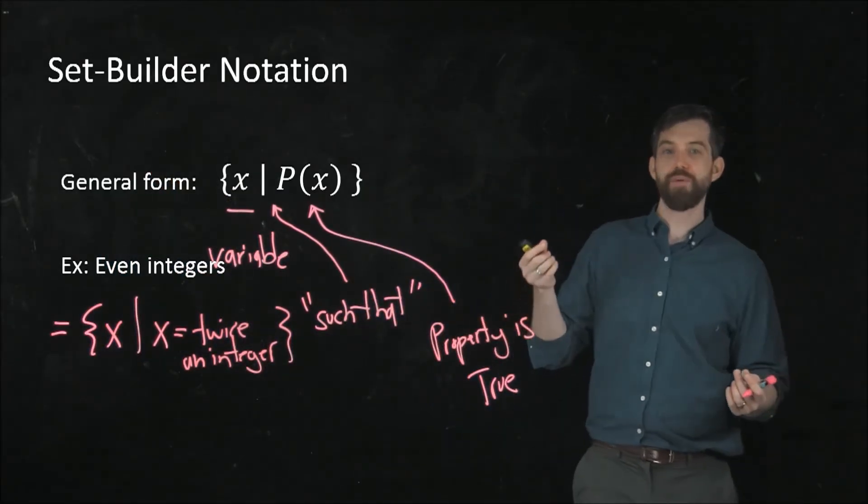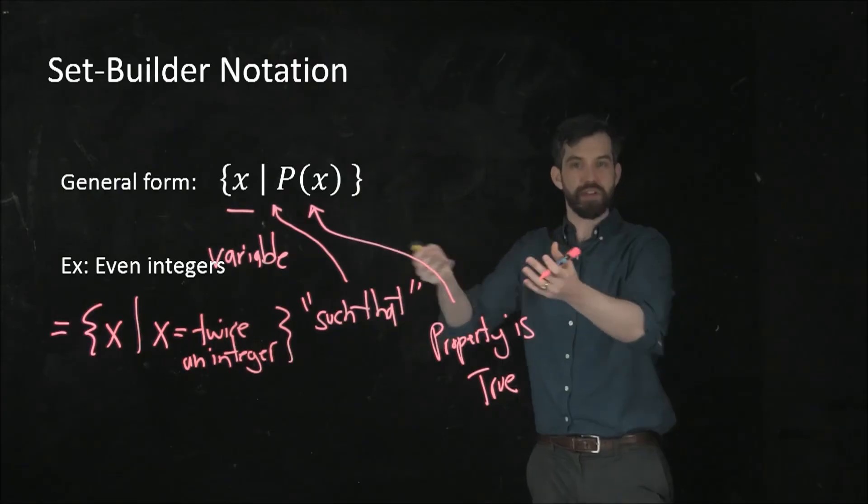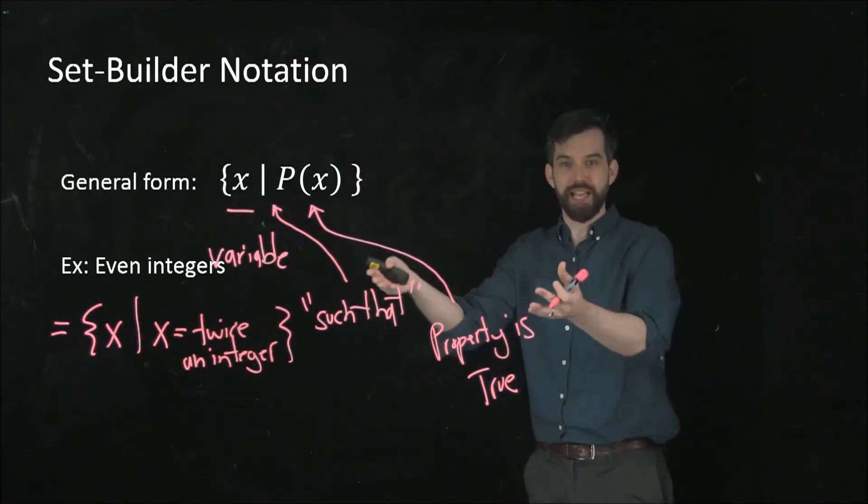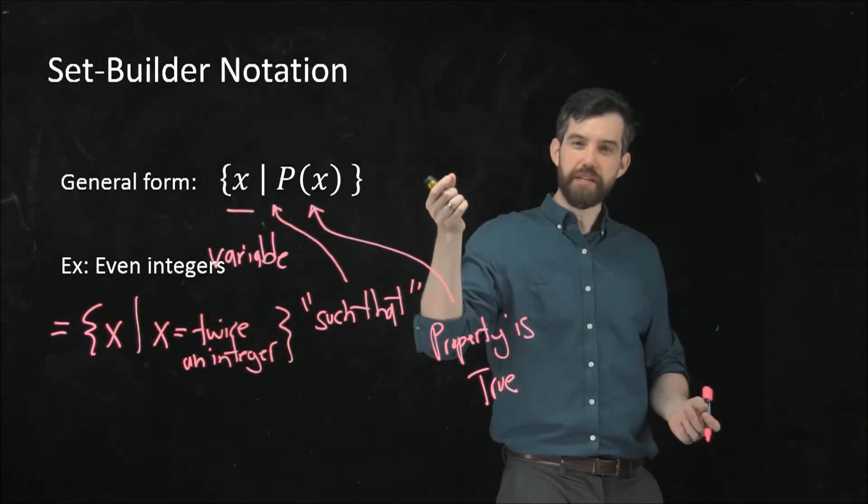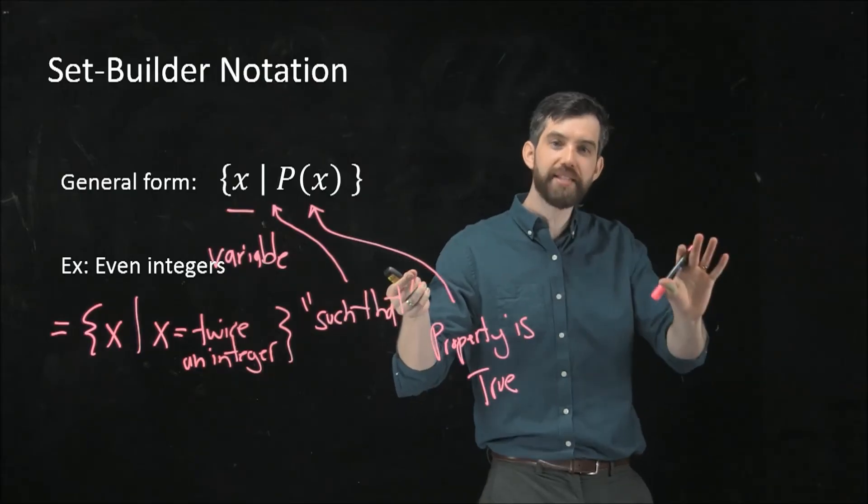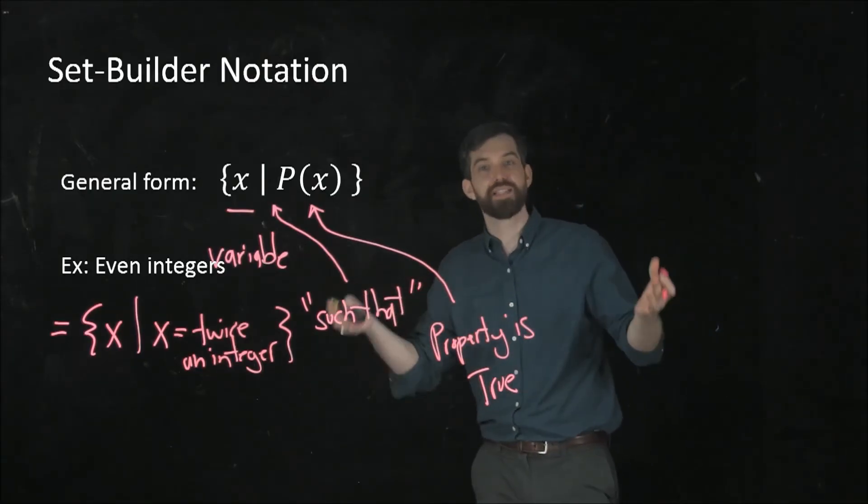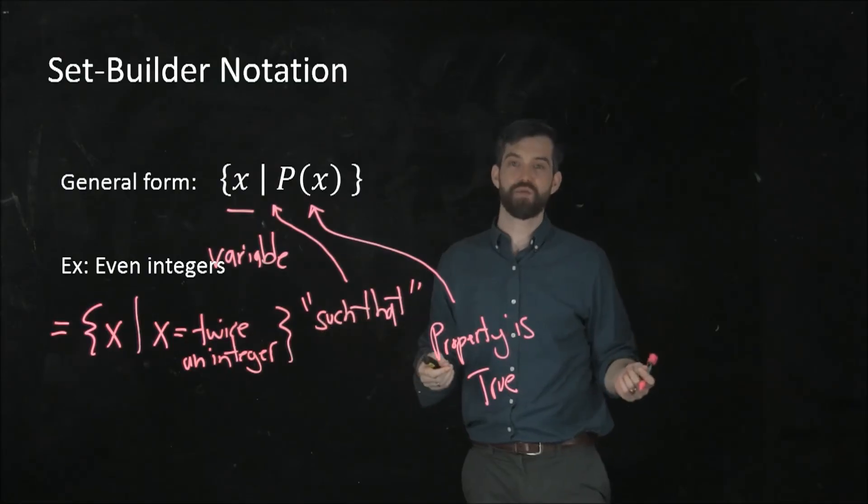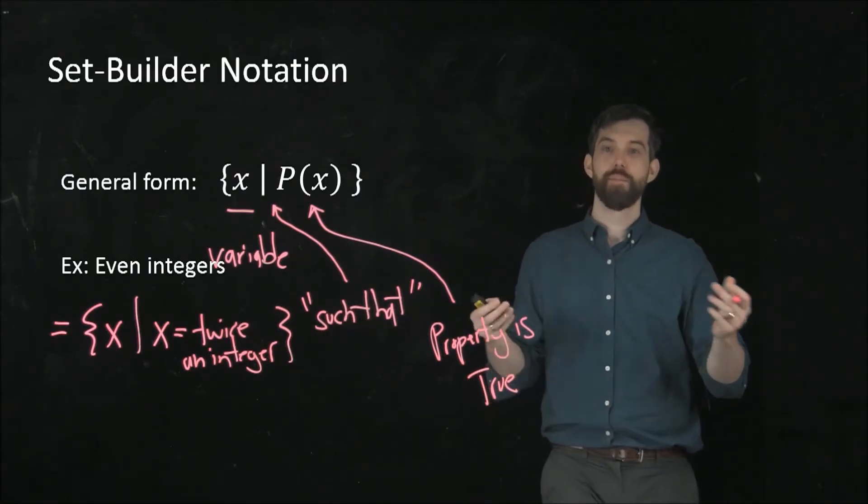So for example, I will say that 6 is an element of this set. I will say that 6 is in here because 6 can be described as being twice the integer 3. And minus 6 is in here because minus 6 can be described as twice the integer minus 3.